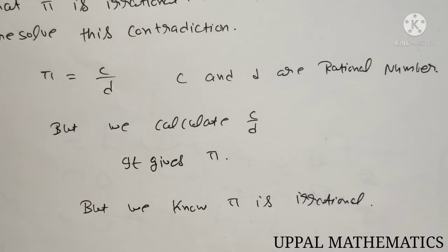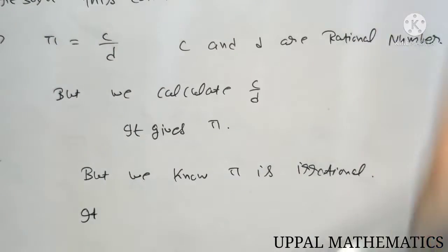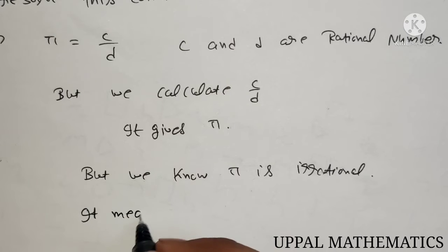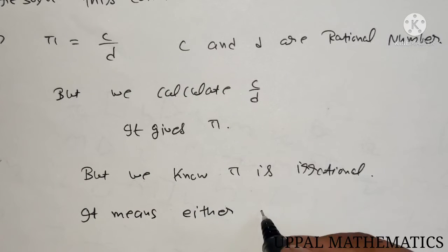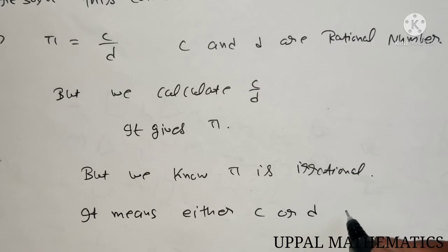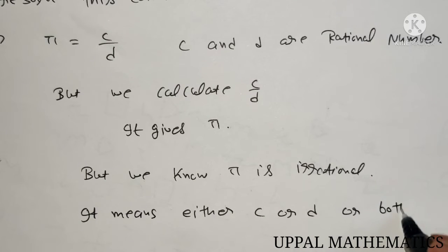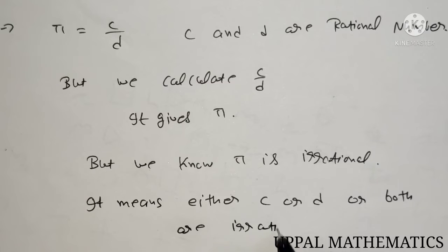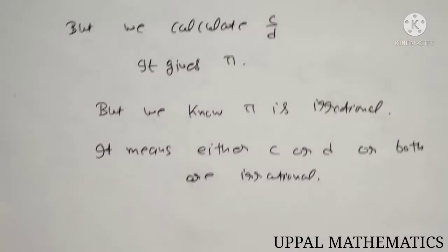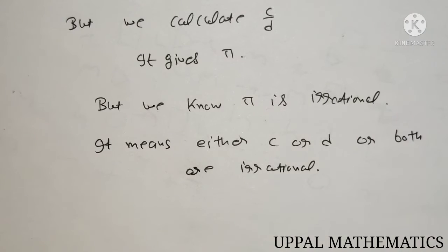So it means either C or D or both must be irrational. What happens when we divide C or D or both?